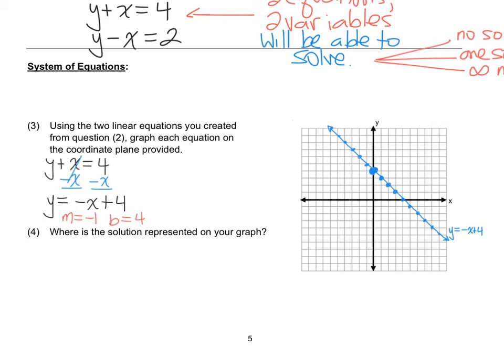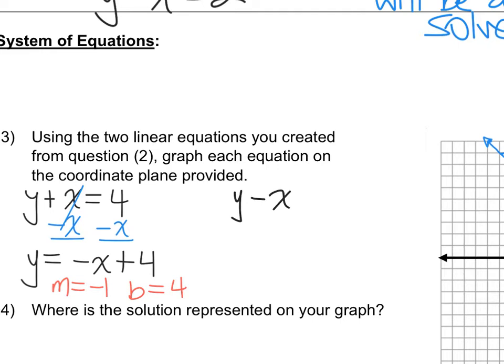Well, I don't want to give it away. So, the next one is y minus x equals 2. Add x to both sides. And you get y equals x plus 2. Slope? 1. Y intercept? 2.